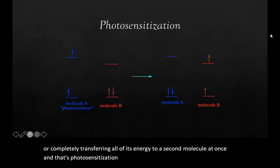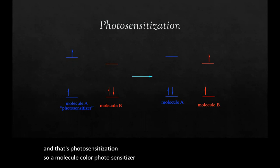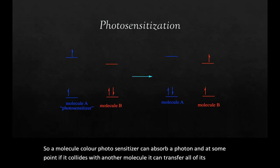So a molecule called a photosensitizer can absorb a photon, and at some point, if it collides with another molecule, it can transfer all of its energy over to that second molecule.